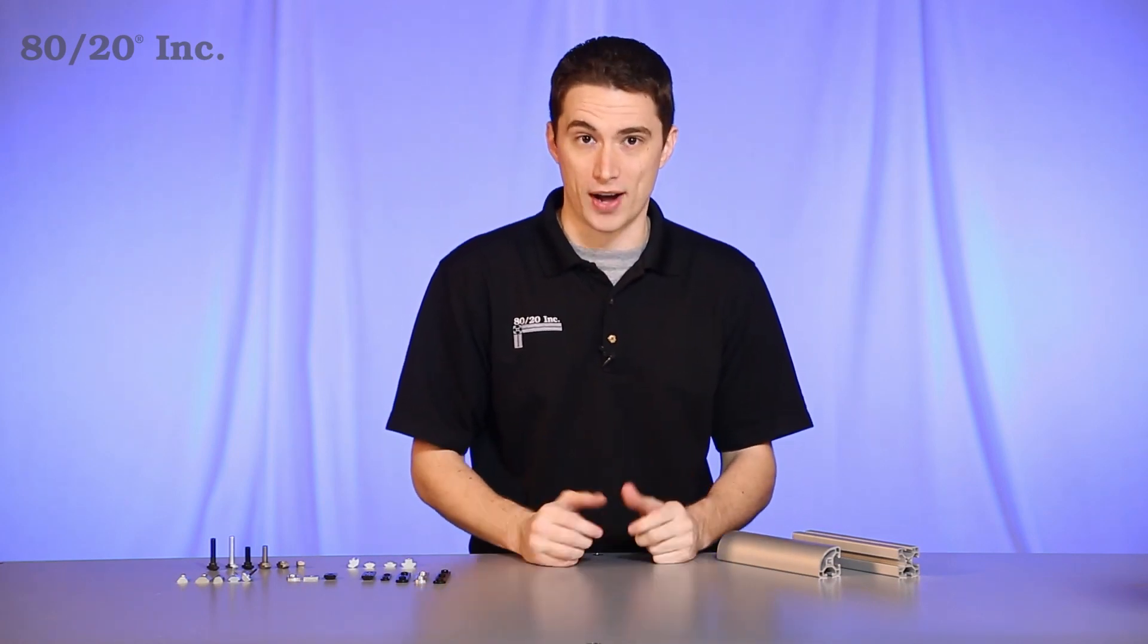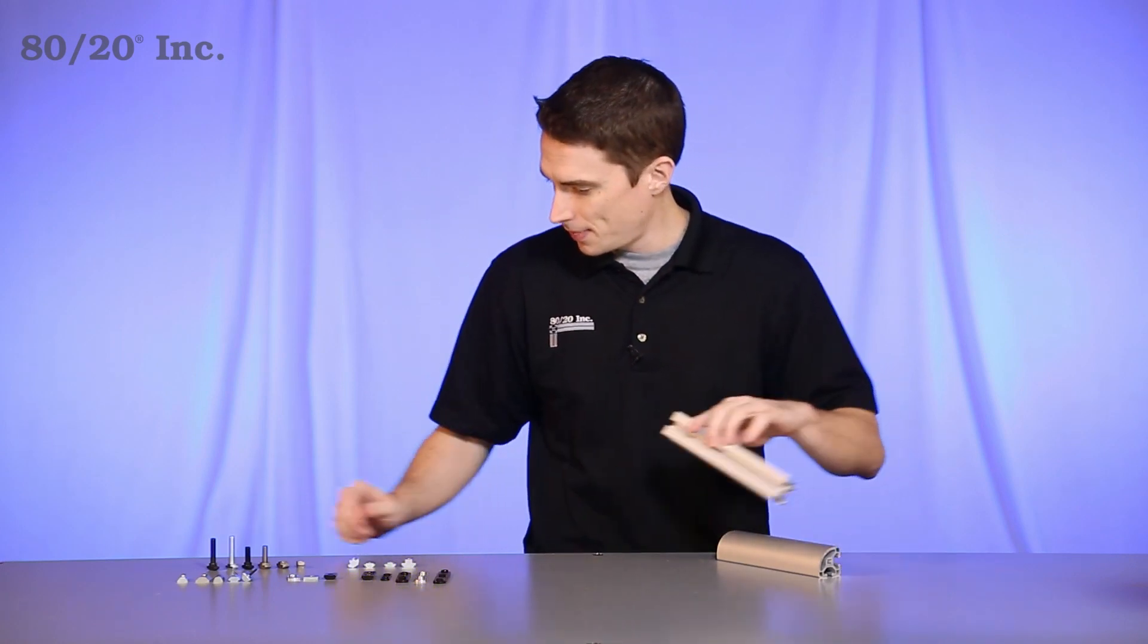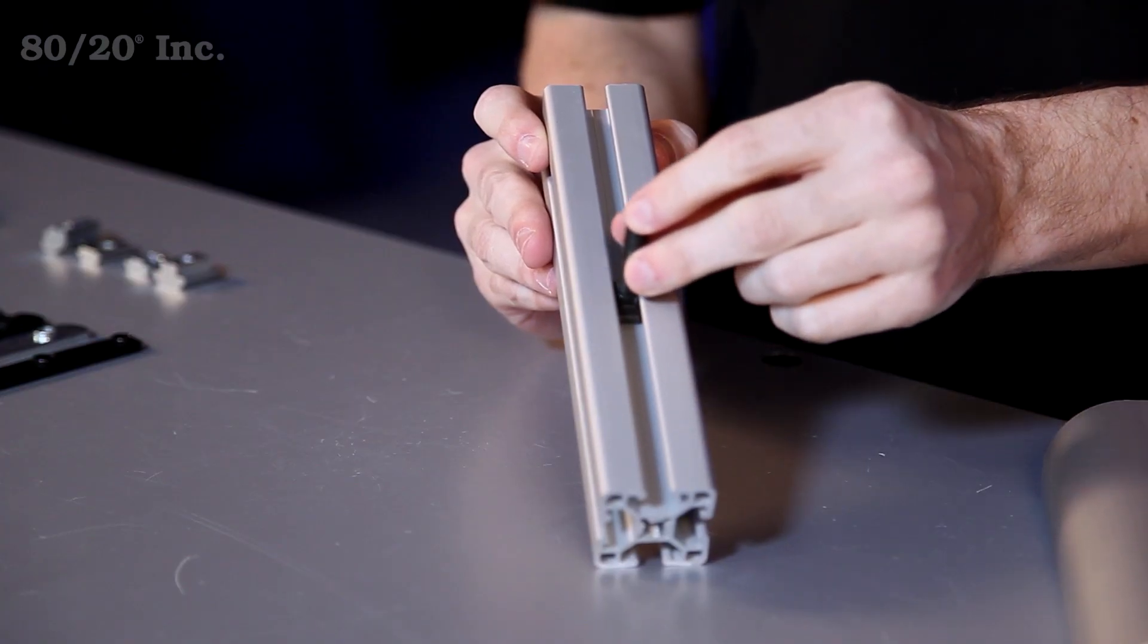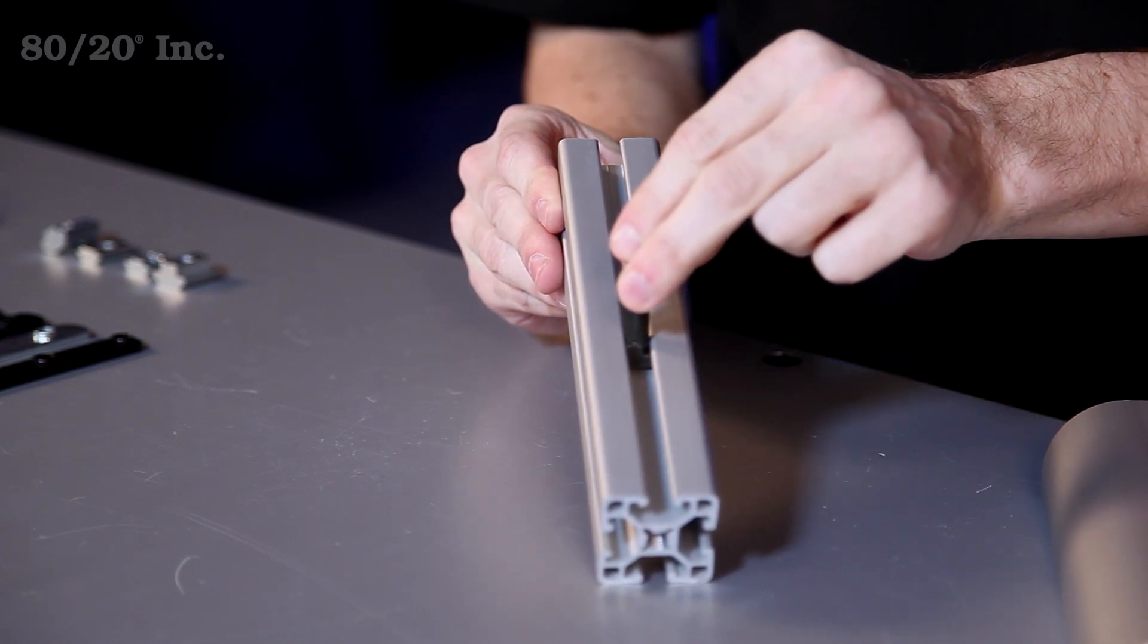Let's say that doesn't work and you're farther along in your project or it's completely finished and you want to add something on later and you can't access the end of your profile. That's where our next two options come into play. The first one is the drop-in T-nut. Simply drop it in from anywhere in the open T-slot and lock it into place.